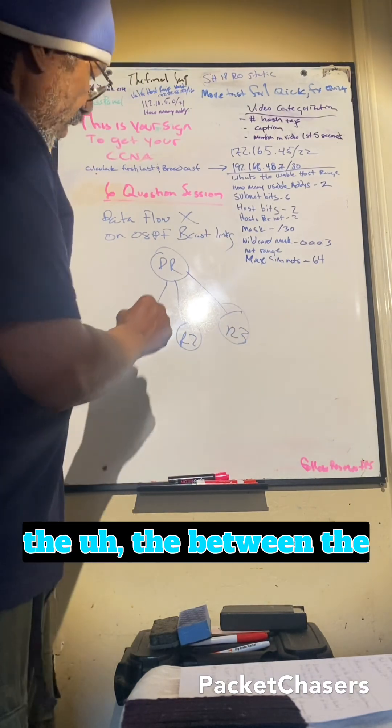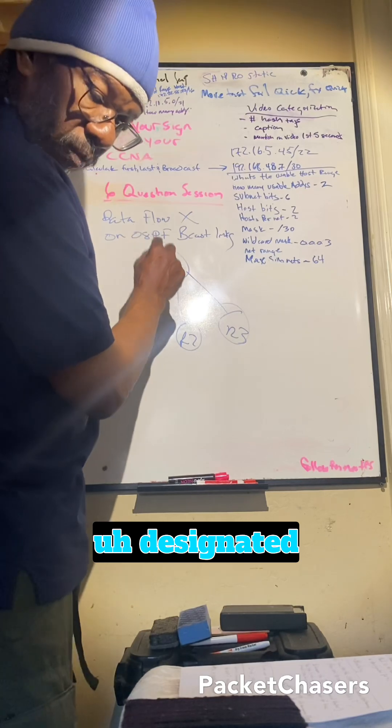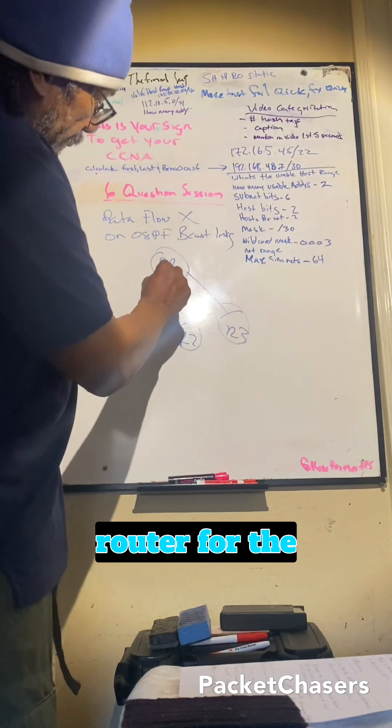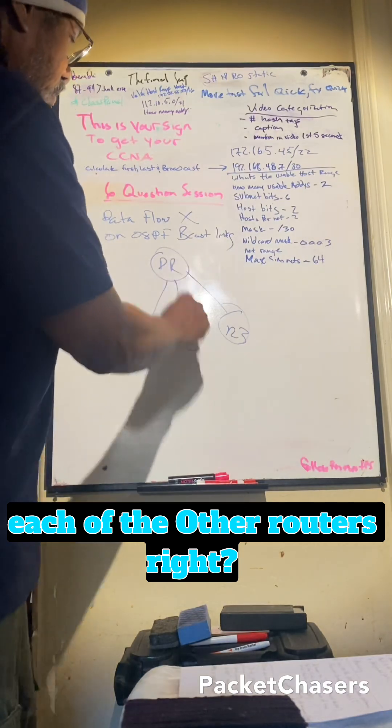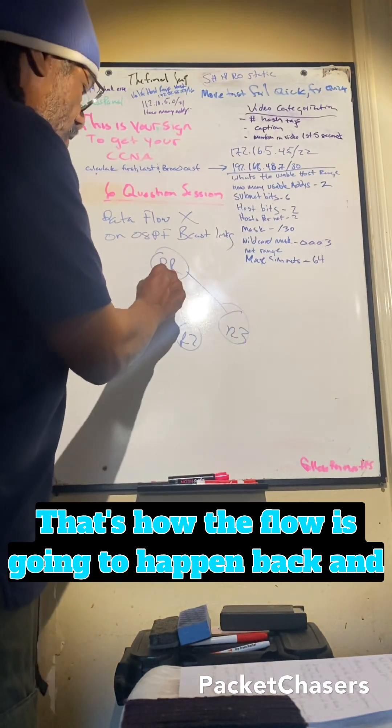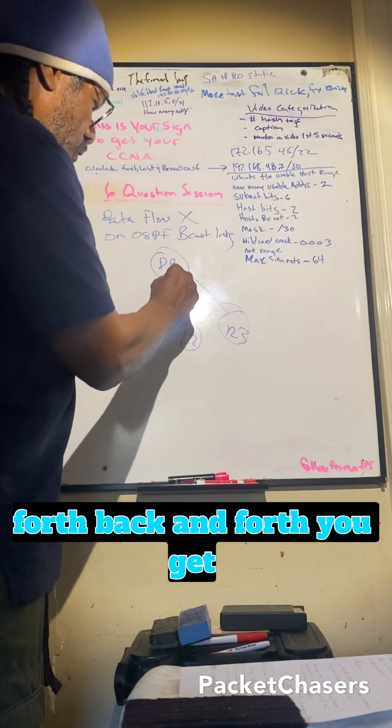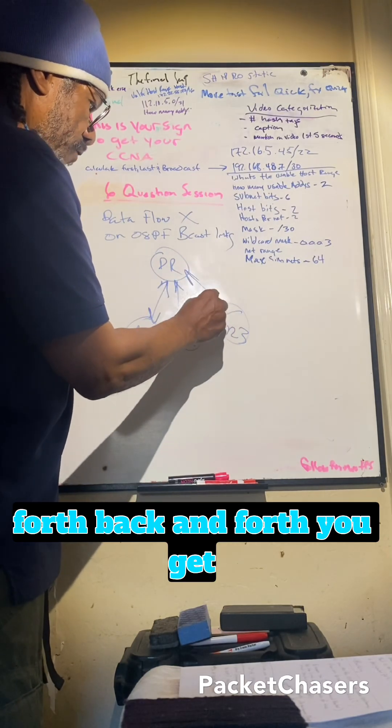Between the designated router for the particular link and each of the other routers, right? That's how the flow is going to happen. Back and forth, back and forth, back and forth. You get me?